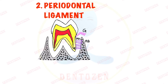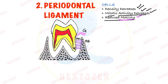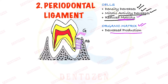The second tissue is the periodontal ligament, which is a soft tissue made up of cells, fibers, and organic matrix. With age, all the cells decrease in density and number, their proliferation capacity decreases, mitotic activity decreases, and their motility also decreases. The production of organic matrix also decreases, and loss of acid mucopolysaccharides has been seen in some studies.